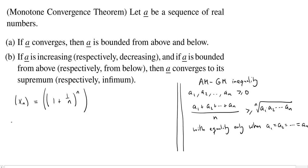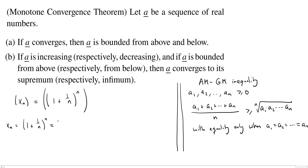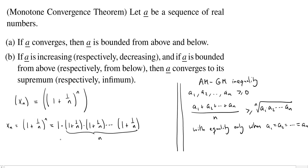I'm going to look at the x_n term, which is 1 plus 1 over n to the n, and compare it with the n plus first term to show it's increasing. I'll use a trick: I write x_n as 1 times (1 + 1/n) times (1 + 1/n) times... repeated n times, so those n factors give exactly (1 + 1/n)^n, and then I seemingly arbitrarily threw in an extra factor of 1.